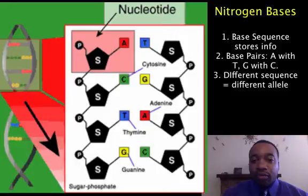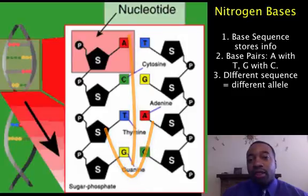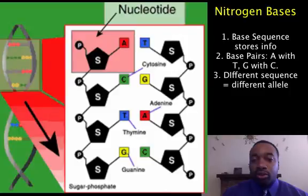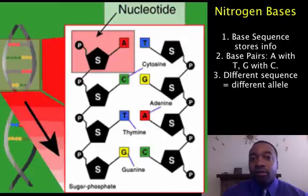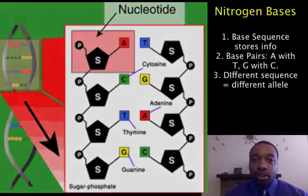So if we look at the left side of this molecule — A, C, T, G — that sequence would be one of the alleles. And if you were to switch the sequence, maybe A, A, T, C, then that would be a different allele. So the order of these nitrogen bases gives us the information to create our body, and changing the sequence would change the allele, which of course would change the trait.